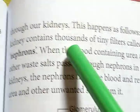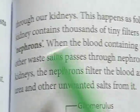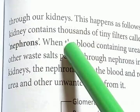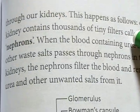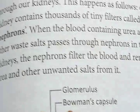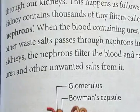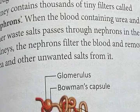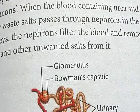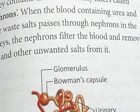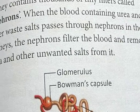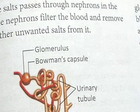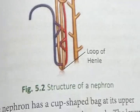Each kidney contains thousands of tiny filters called nephrons. The nephron is the structural and functional unit of the kidney. When blood containing urea and other waste salts passes through the nephron, the nephron filters the blood and removes unwanted harmful substances — including dissolved salts and urea.